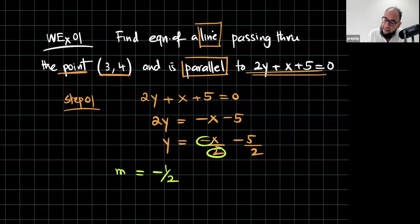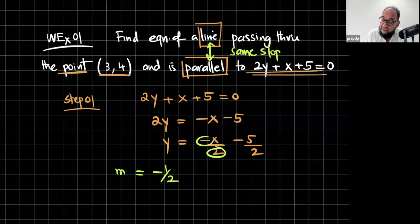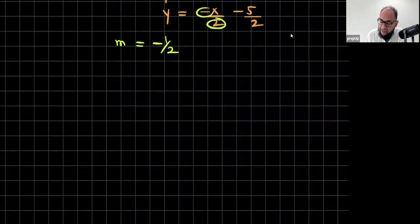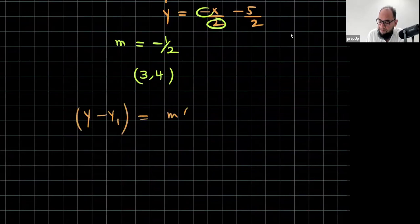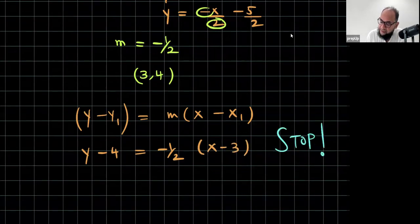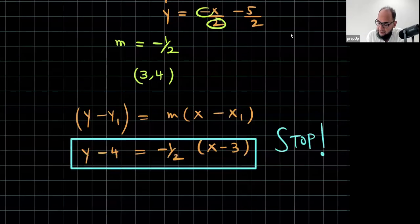Now, if two lines are parallel, they should have the same slope. They should have the same gradient and it's passing through the point (3,4). So, therefore, I have the point (3,4). I'm using the format y - y1 = m(x - x1). y - 4 = -1/2(x - 3). Just stop over here. The reason is, they were asking for the equation and let me use a box and I found the equation.